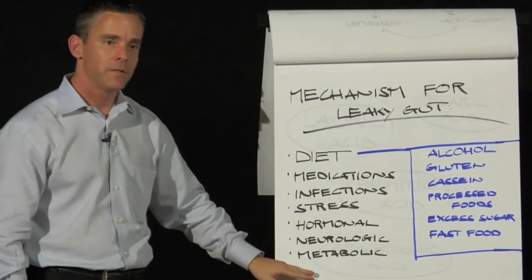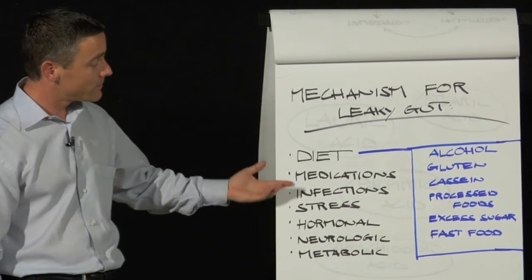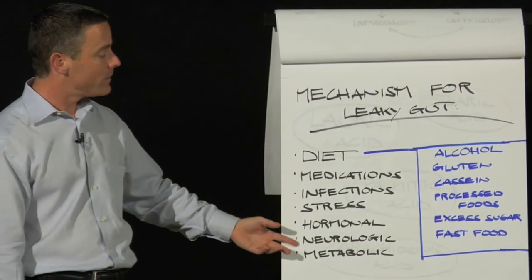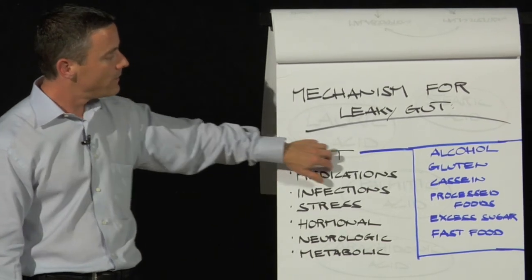So these are the mechanisms that can lead to a leaky gut. And if you look at a Western society of medications, infections, stress, hormonal imbalances, neurological issues, metabolic issues, and specifically diet, alcohol,